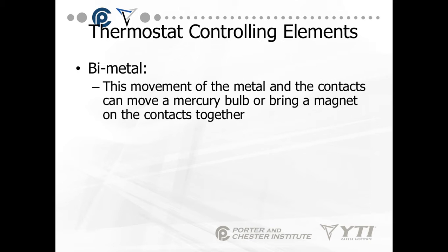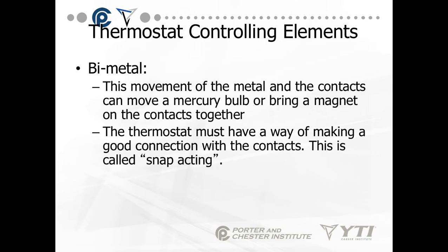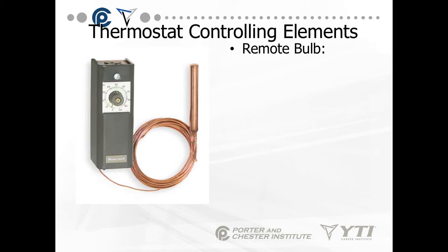The movement of the metal in the contacts can move a mercury bulb or bring a magnet on the contacts together. The thermostat must have a way of making a good connection with the contact. This is called snap acting — they snap together and snap apart.